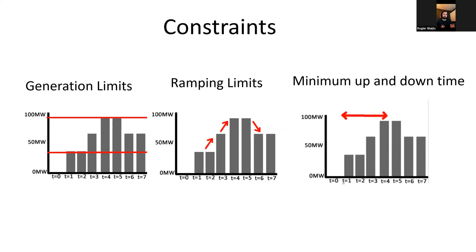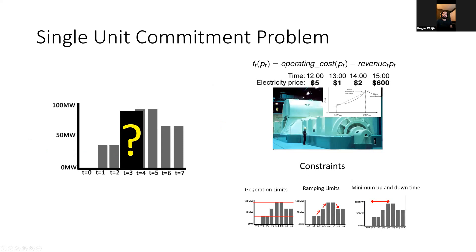Not every schedule is possible because we have some constraints. You have the generation limits - when a generator is off it must produce zero megawatts, but when it's on it needs to produce within its minimal stable generation and maximum generation. We have flexibility requirements: ramping limits that set a limit on how two power output levels can differ, and minimum up and downtime. When you turn a generator on, it must stay on for a specified amount of time. So we need a cost optimal schedule given electricity prices subject to these constraints.